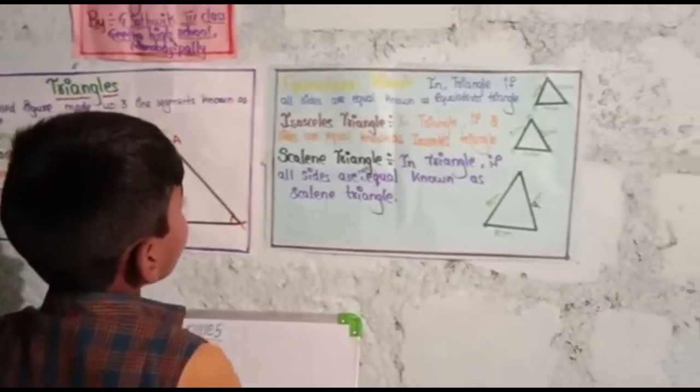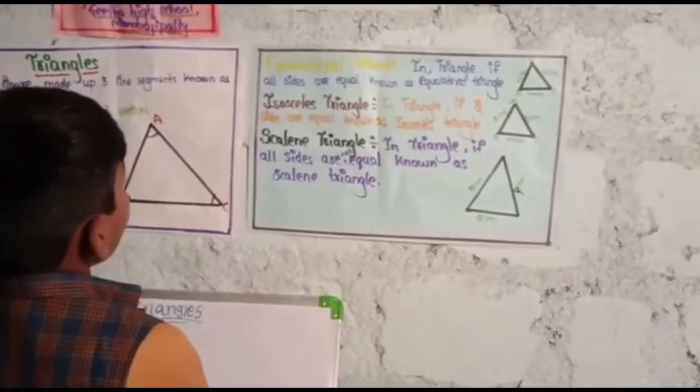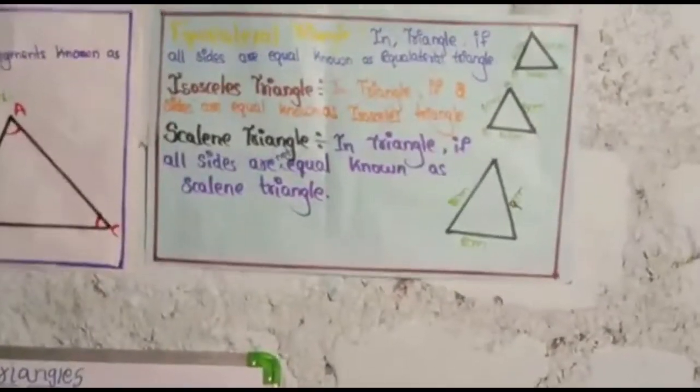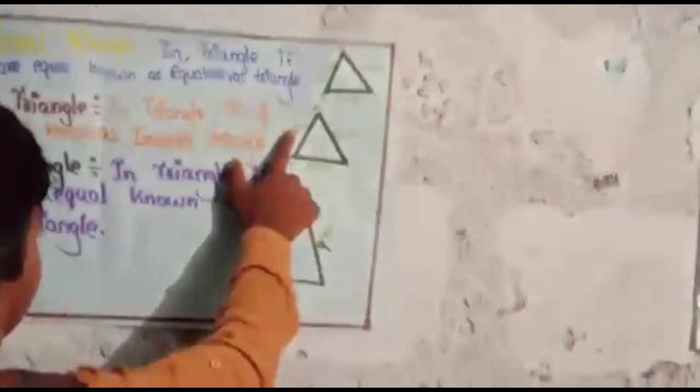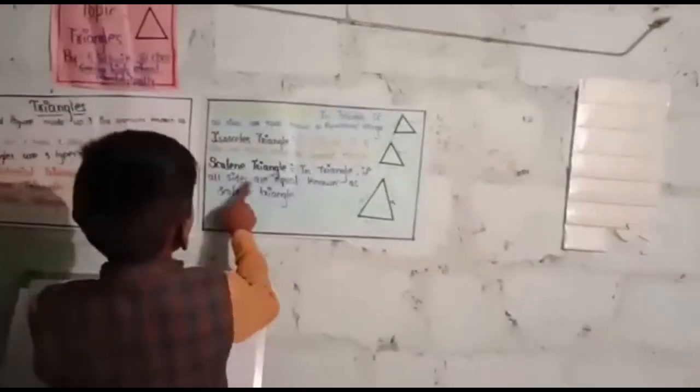Isosceles triangle. Isosceles triangle means two sides are equal, we call it isosceles triangle.